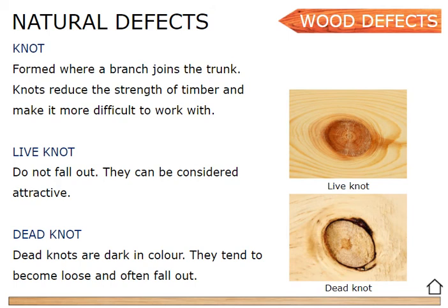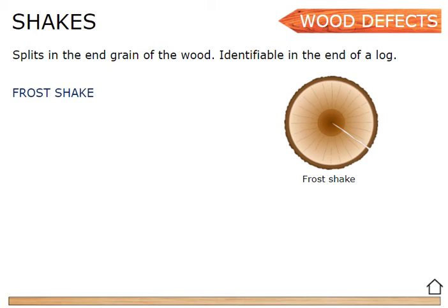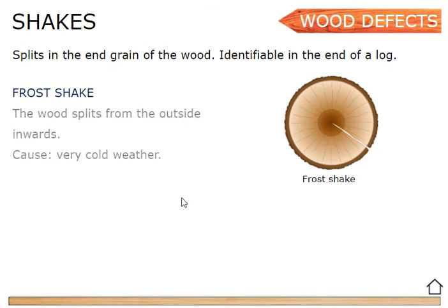We're going to move on now to shakes. What is a shake? A shake is basically a split in the end grain of the wood, identifiable at the end of the log — the section that we cut off. All shakes are cracks. The first one is a frost shake — just a straight line. It's a crack coming from the center, in other words from the pith, through the heartwood, through the sapwood, through the bark, in a fairly straight line. That's called a frost shake.